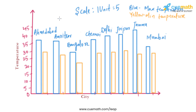The bar in blue represents the maximum temperature and the bar in yellow represents the minimum temperature. For Amritsar, the maximum temperature of 37 will lie between 35 and 40, and the minimum of 26 will lie between 25 and 30. Like that, we draw bars for Bangalore, Chennai, Jaipur, Jammu, and Mumbai.